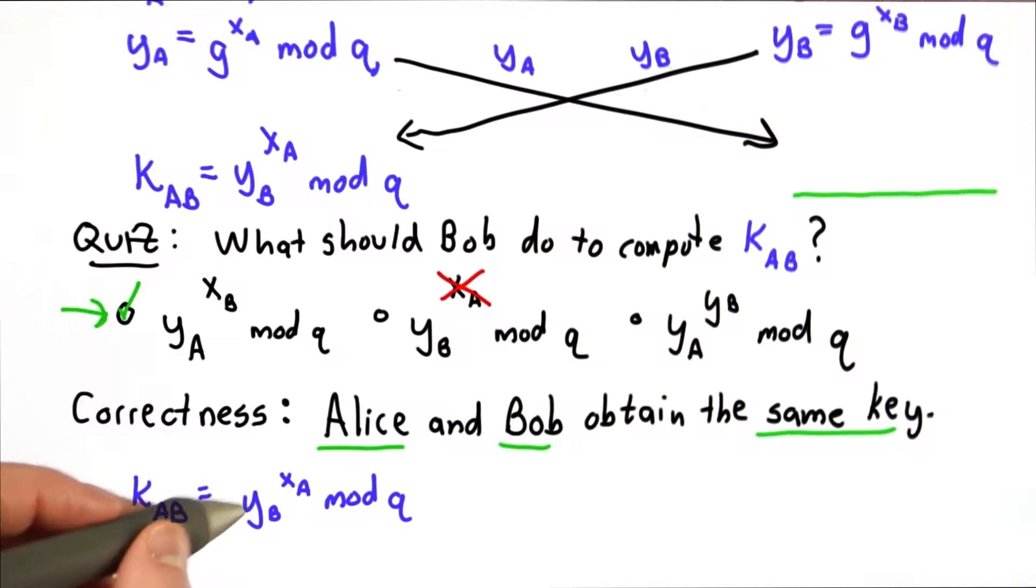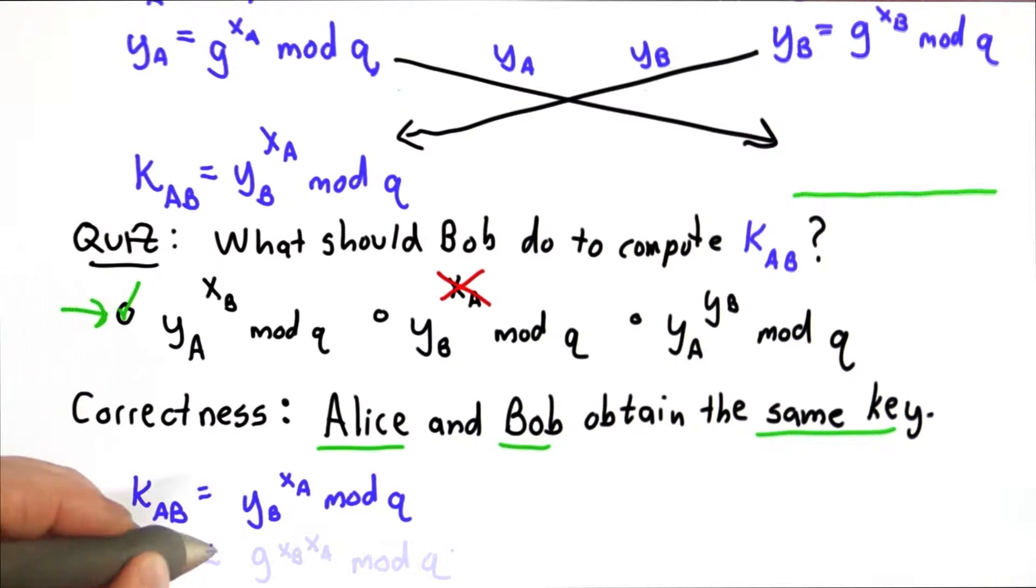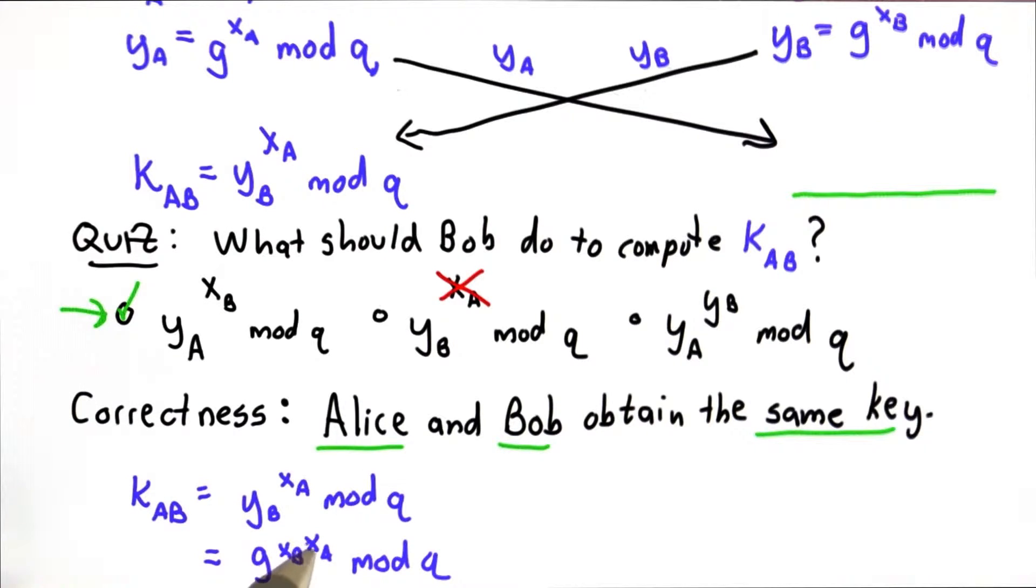So the key Alice computed was yB to the xA. The value of yB is g to the xB. So that's equivalent to g to the xB xA mod q.